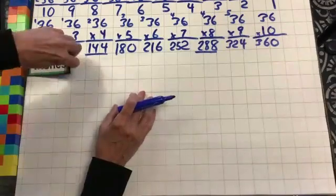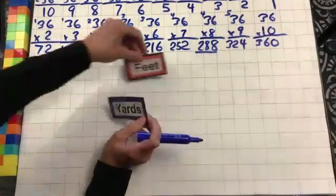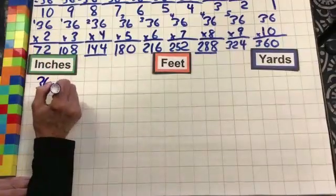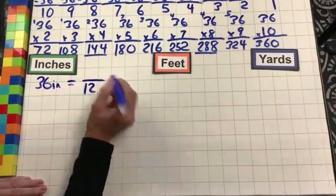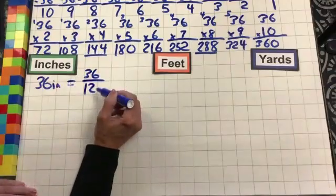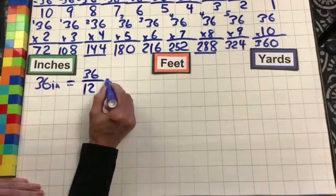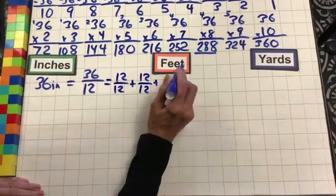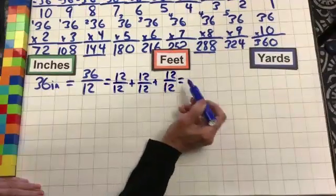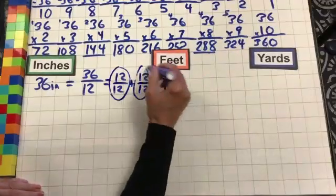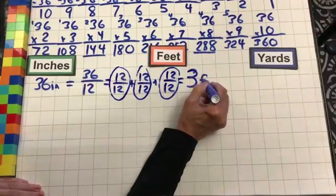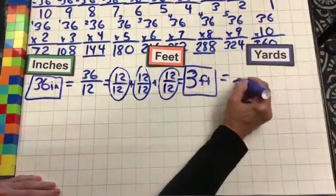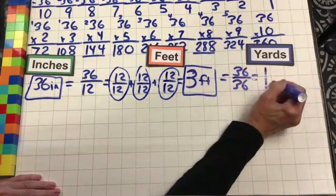Moving on to measurement — standard form of linear measurement. Linear is length. Today's number is 36 inches, and we know it takes 12 of them to make a foot. So 36 divided by 12: 12 over 12 plus 12 over 12 plus 12 over 12 equals 36. 12 plus 12 plus 12 is 36, so we have 3 whole feet. 36 inches is the same as 3 whole feet. In yards, it takes 36 inches to make a yard, and we have 36 — so we have 1 whole yard.